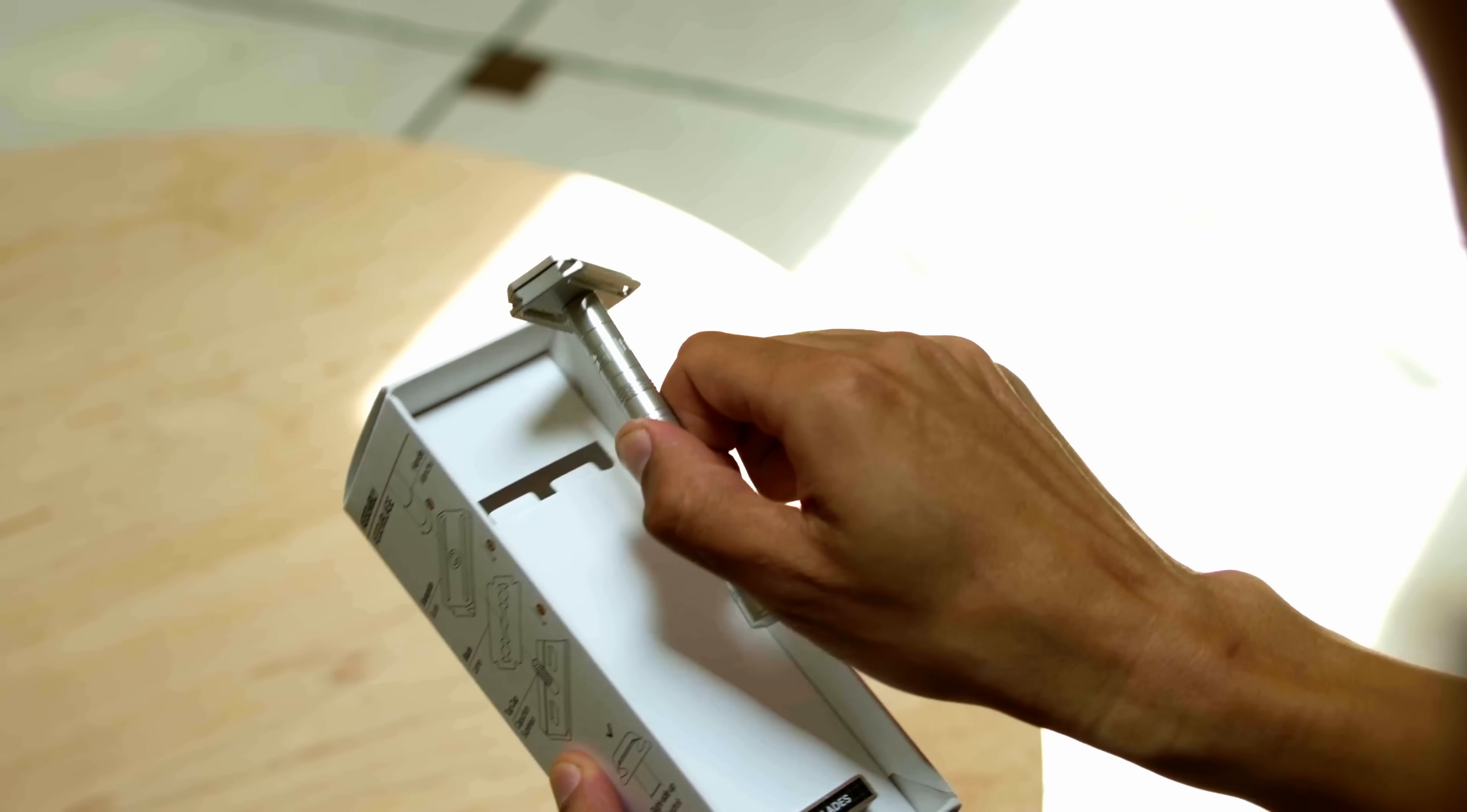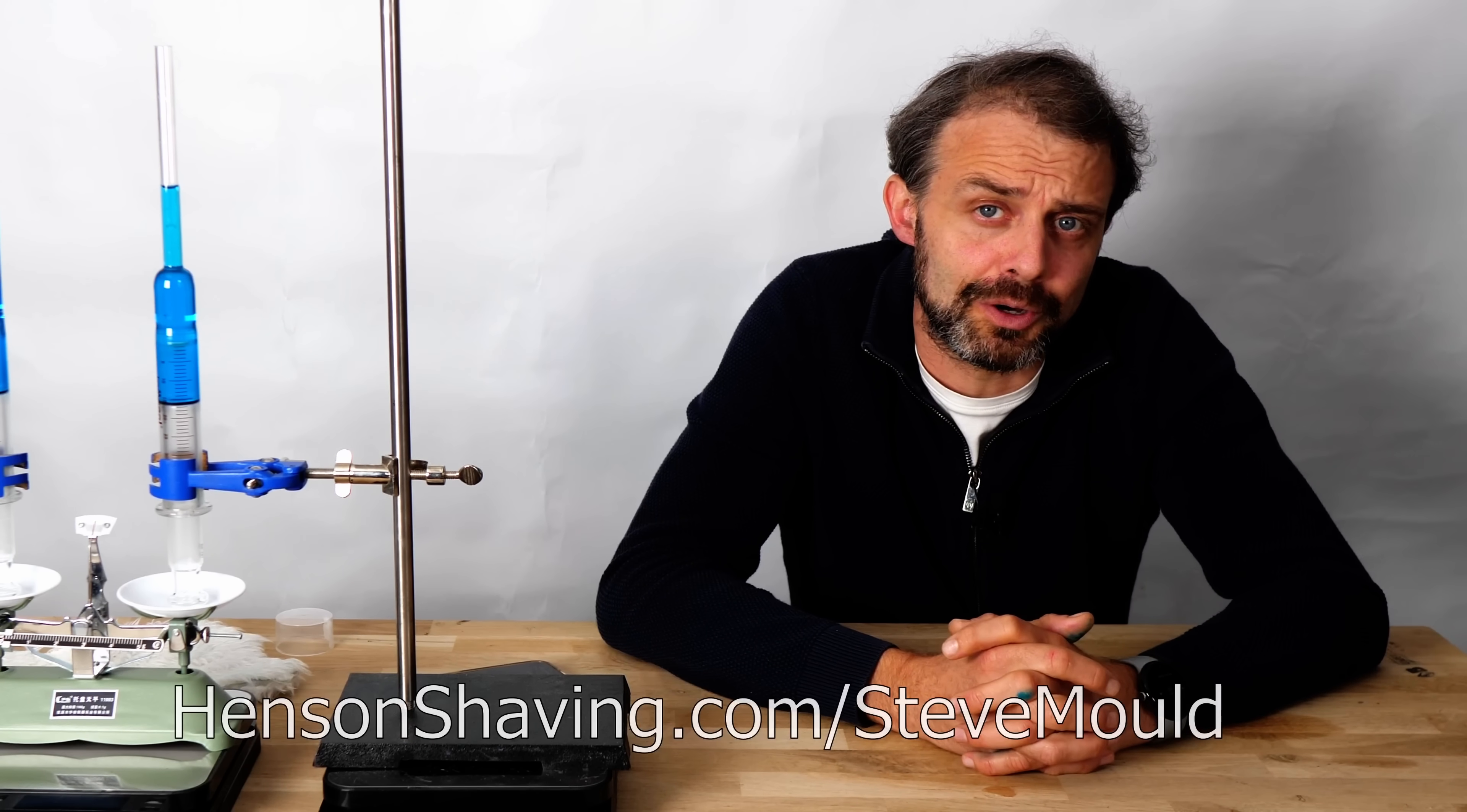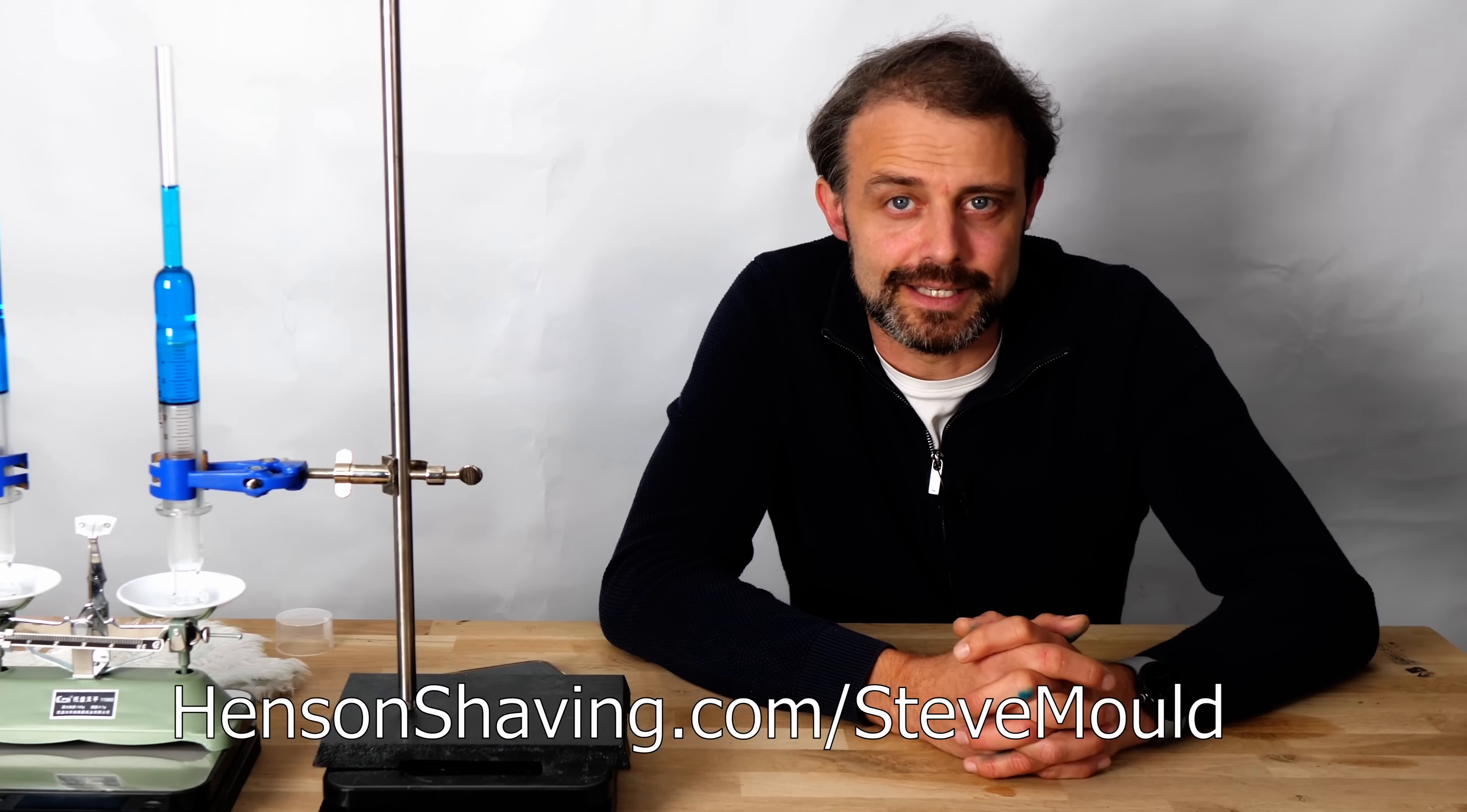The economics is that you'll pay a little bit more upfront for the handle. But then the blades are pennies. Compare that to cartridges that cost a few dollars each. And it works out that you're making a saving after just a few months. And you get to own something really nice. The promo on this one is really good. If you go to HensonShaving.com/SteveMould and use promo code SteveMould at checkout, you'll get 100 free blades with your purchase of a safety razor. The link is also in the description. So get your Henson AL13 today.